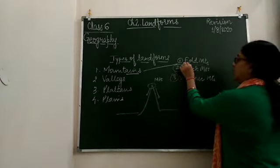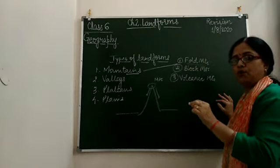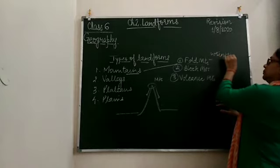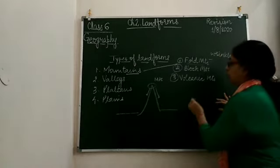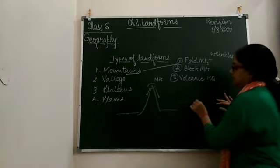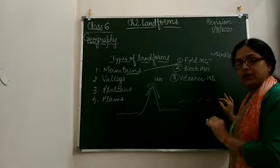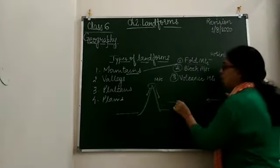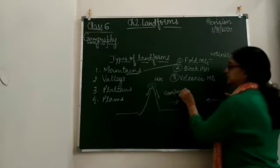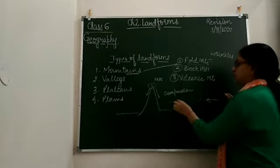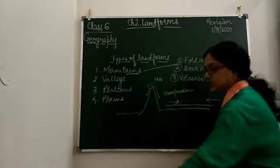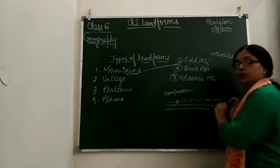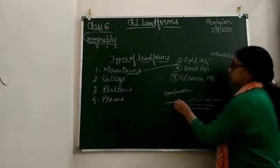What are fold mountains? Fold mountains are the result of wrinkles on the earth's surface or on the rock strata. When there are wrinkles on the rock strata, these mountains are formed due to extra compression from the opposite sides. When compression acts from opposite sides, the rock strata form a wrinkle on the upper surface.